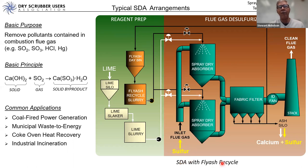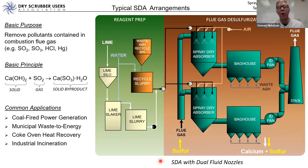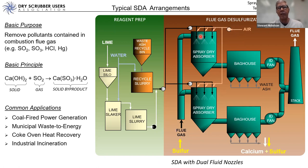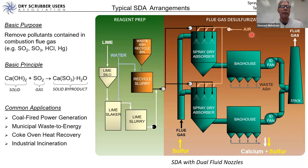A third common configuration for SDAs is the dual fluid nozzle configuration. Instead of mechanically spraying slurry through a rotating atomizer, in a dual fluid nozzle we atomize the slurry using nozzles. The two fluids referred to are the slurry itself and compressed air — compressed air is injected into a nozzle configuration, and those nozzles are distributed within the SDA vessel to provide even distribution of the atomized slurry into the flue gas as it enters.